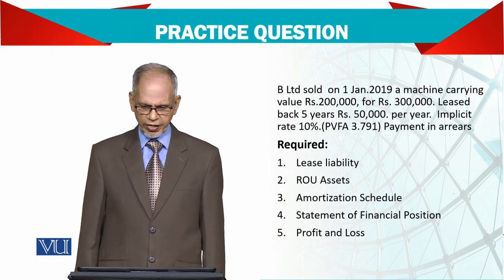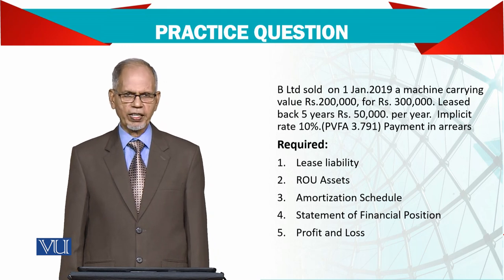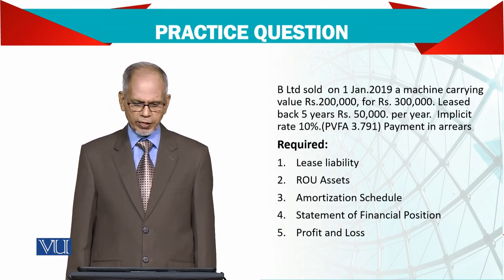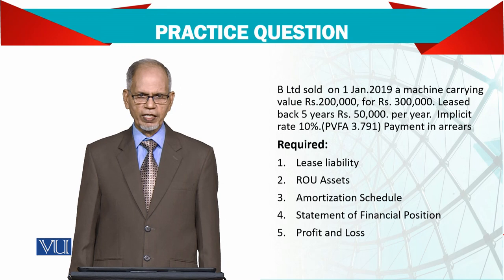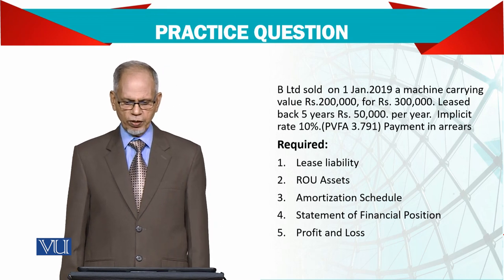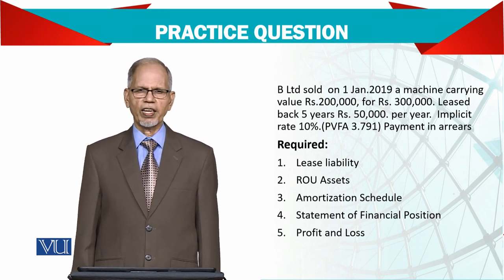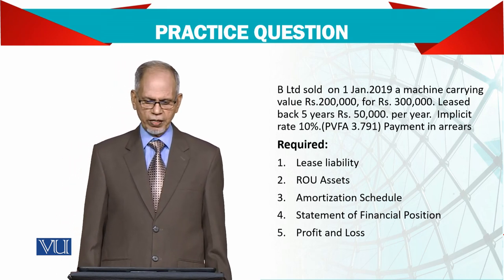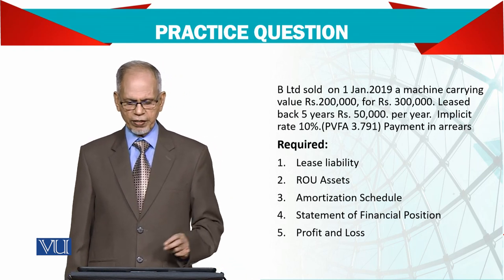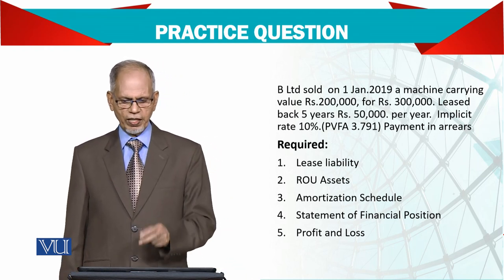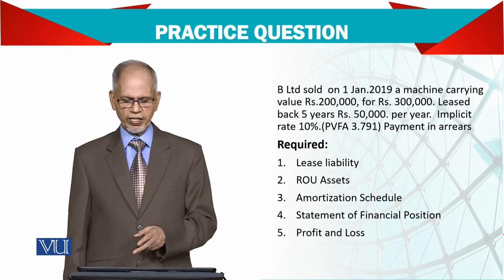The leaseback is for 5 years, paying 50,000 per year. The implicit rate is 10% and the present value annuity factor is 3.791. Look into the table and find under 5 years and 10% what the factor is.